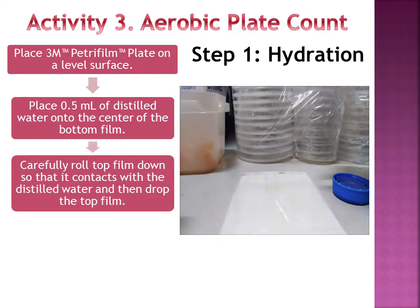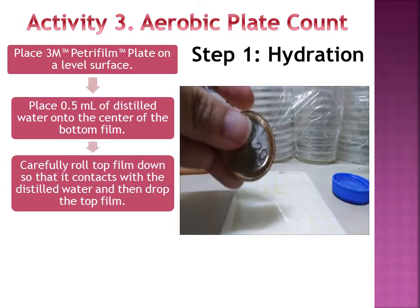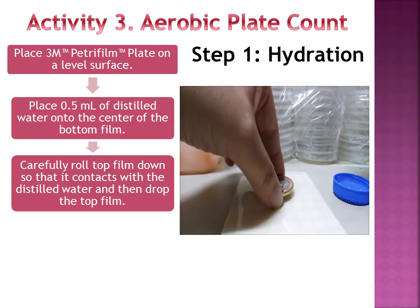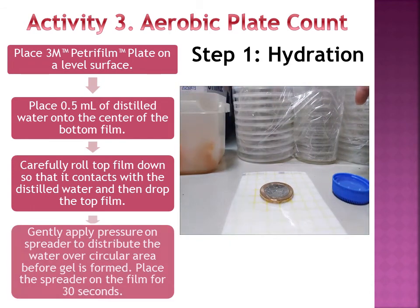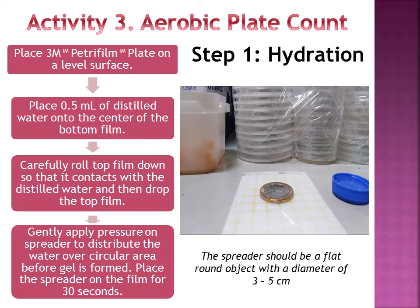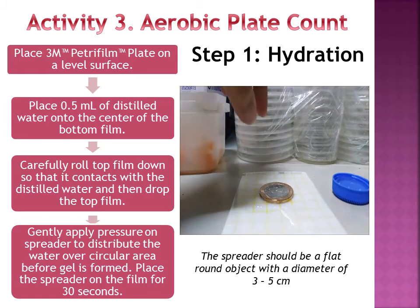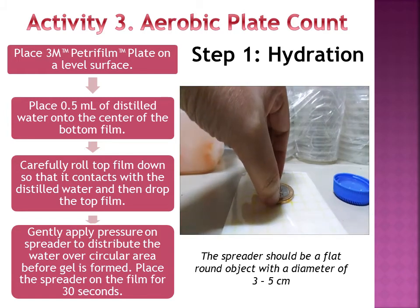Carefully roll the top film down so that it contacts the distilled water, then drop the top film. Gently apply pressure on the spreader — in this case a 20 peso coin — to distribute the water over the circular area before the gel is formed. Place the spreader on the film for 30 seconds. You can use any spreader, but it should be a flat round object with a diameter of 3 to 5 cm.